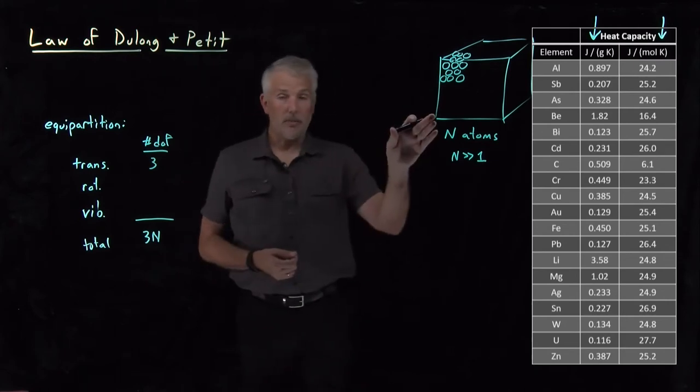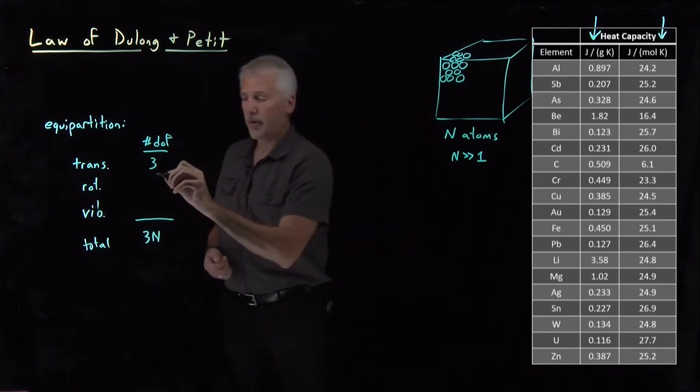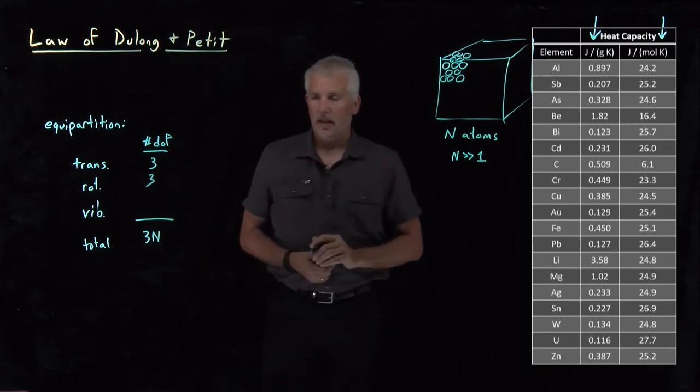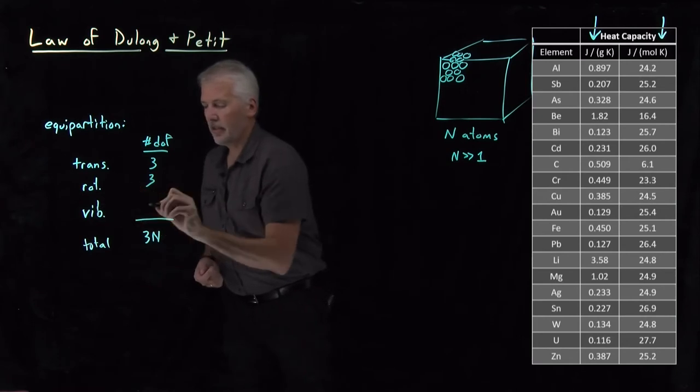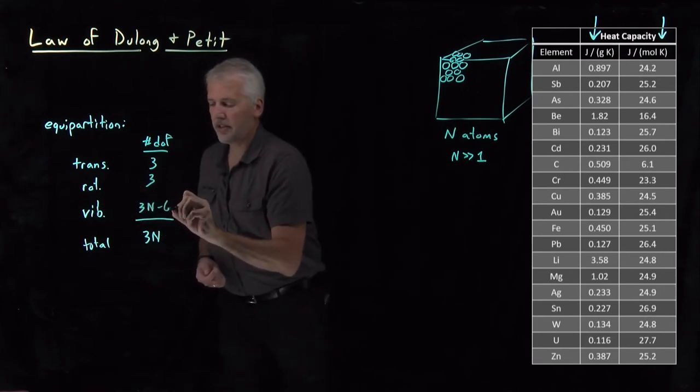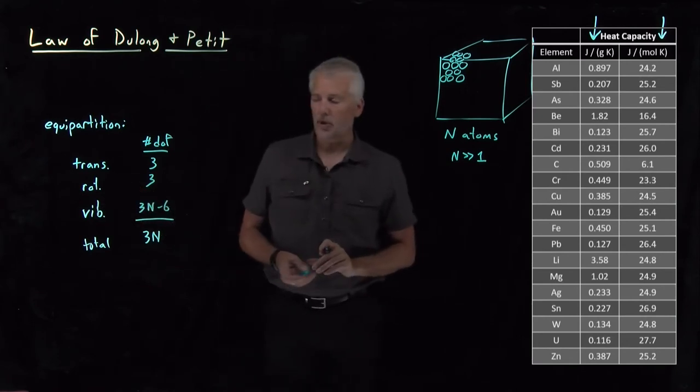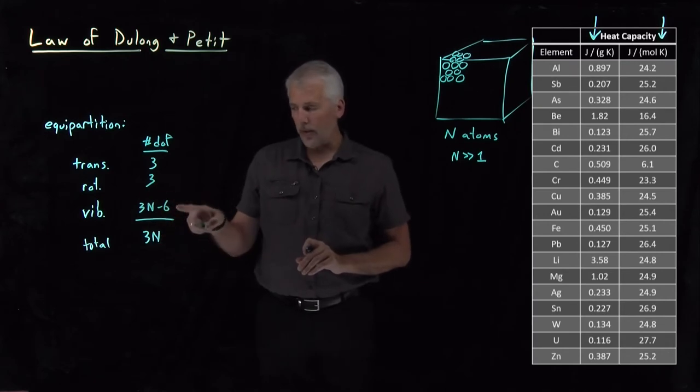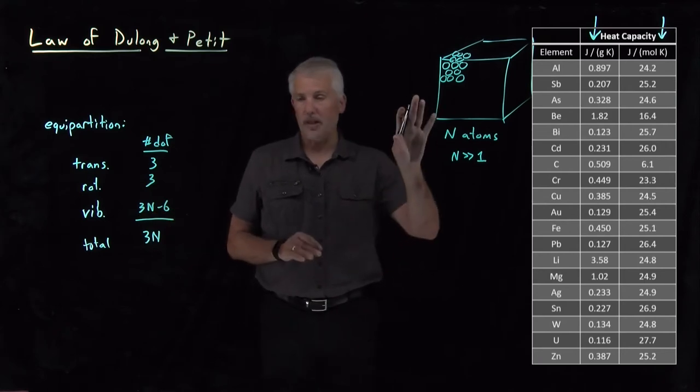It's not a linear molecule, so it can rotate in three different ways. And that leaves 3N minus 6 different vibrational modes. So if N is Avogadro's number, there's no way we want to count and identify what are the nearly three times Avogadro's number of different vibrational modes in this molecule, but they're in there somewhere.